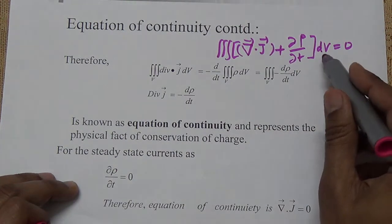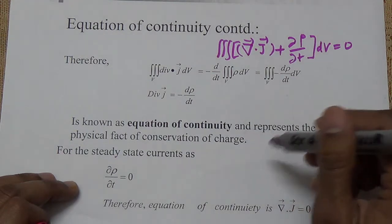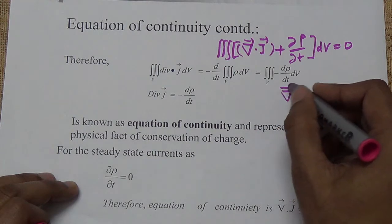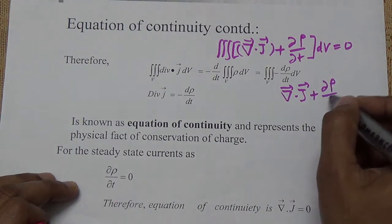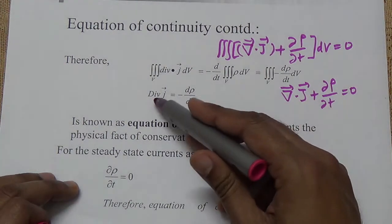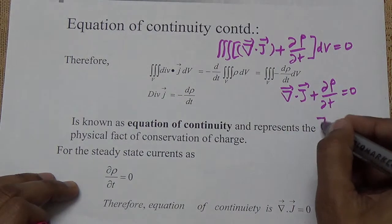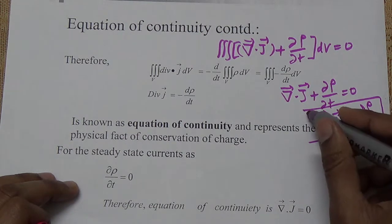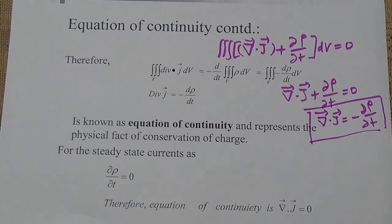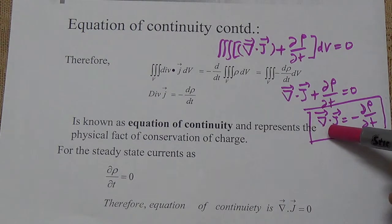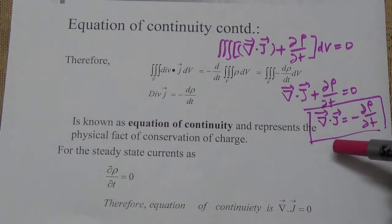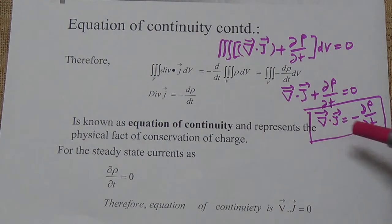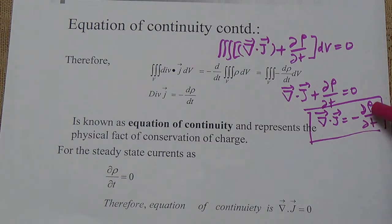Comparing both sides, we can write the volume integral of (∇·J + ∂ρ/∂t) dV = 0. Since the volume of the cylinder cannot be zero, this factor inside must equal zero. Therefore: ∇·J + ∂ρ/∂t = 0, which gives us ∇·J = -∂ρ/∂t. This automatically proves the first statement: the divergence of J represents the total current density flowing out, equal to the rate of decrease of the volume charge density.